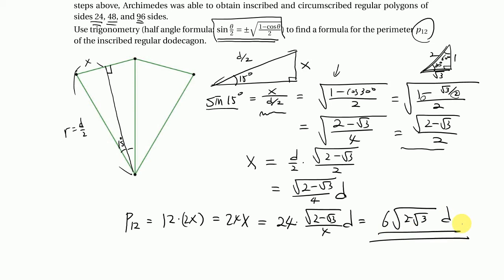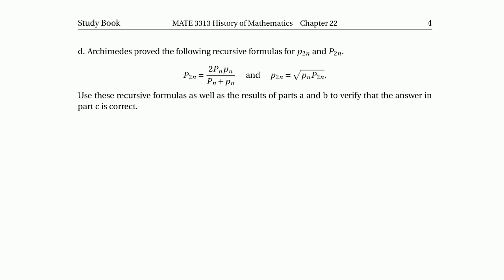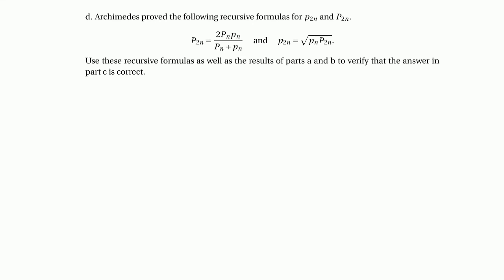We apply the same rule for both inscribed and circumscribed circles, repeating the process. It requires a lot of work, but eventually Archimedes found formulas — recursive relations among the sequences of small p_n and capital P_n. We want to verify those formulas using our previously computed results.